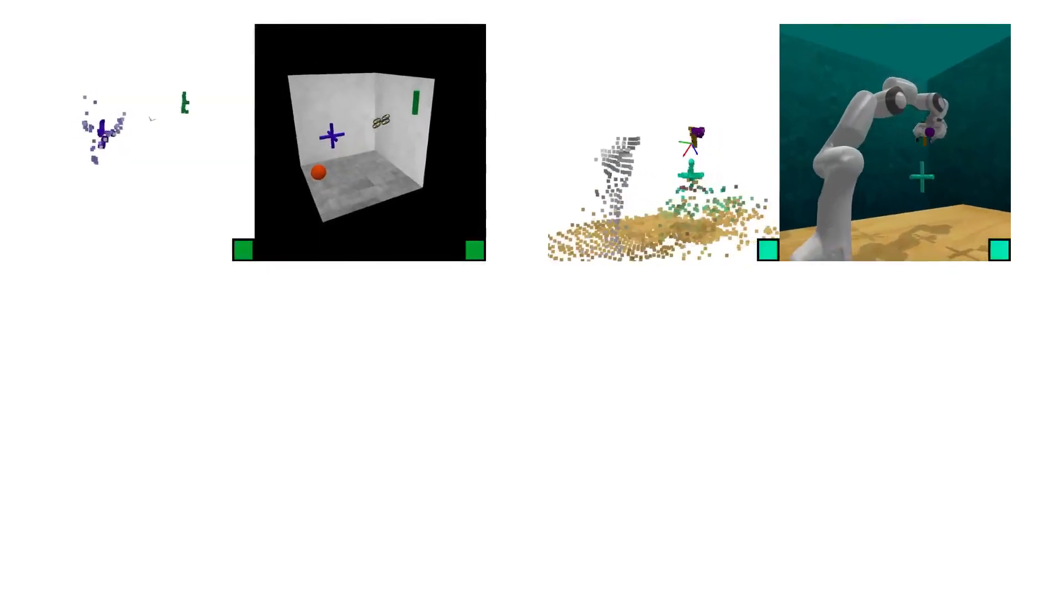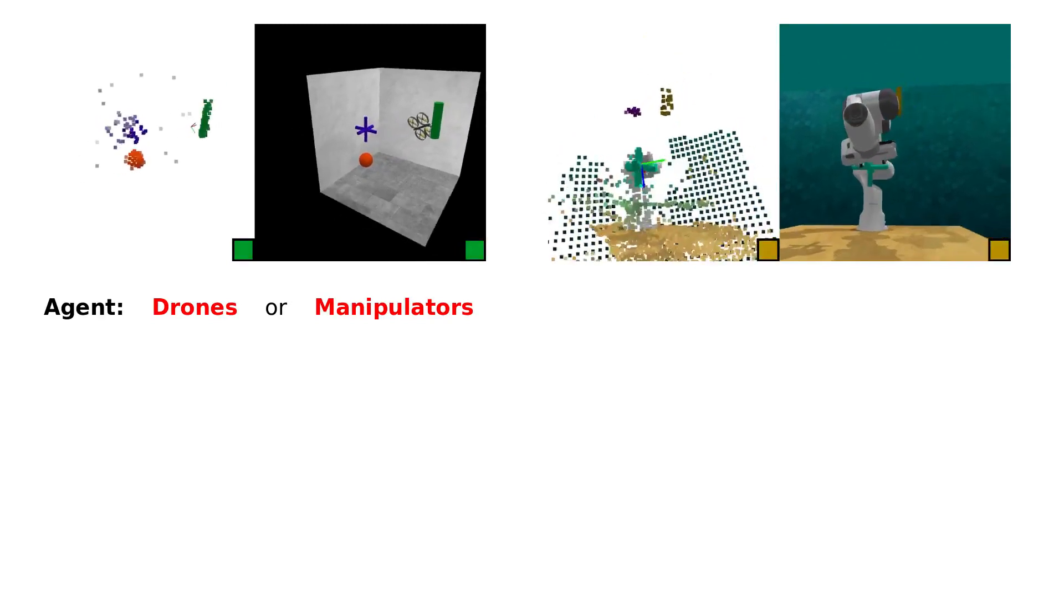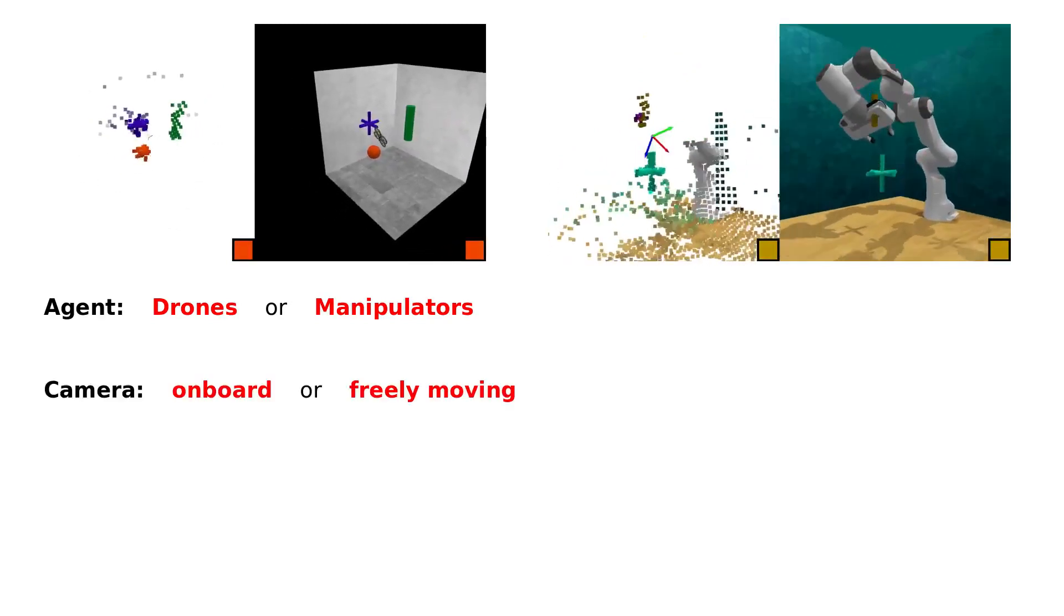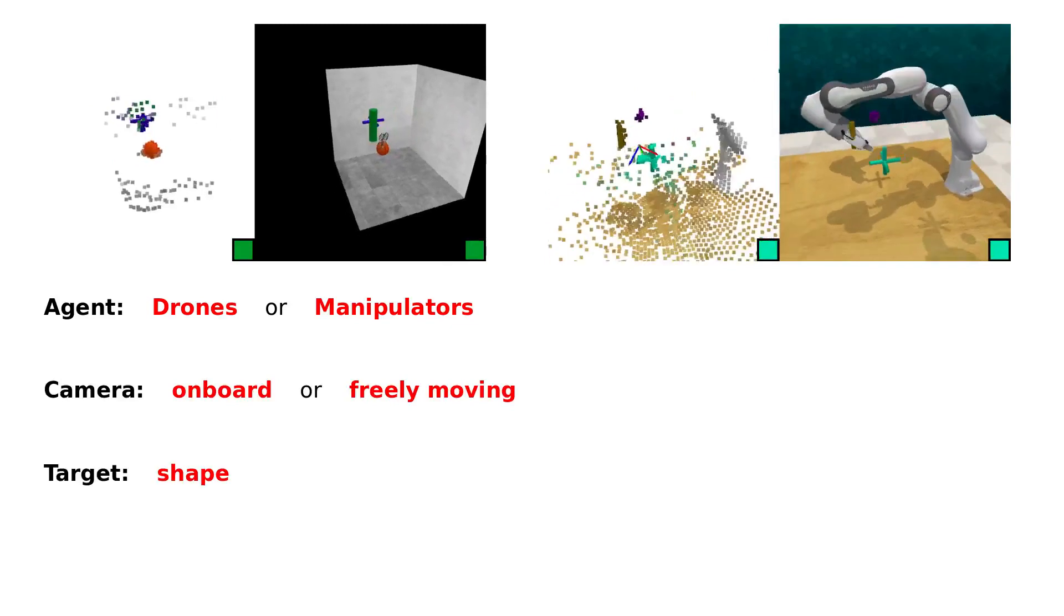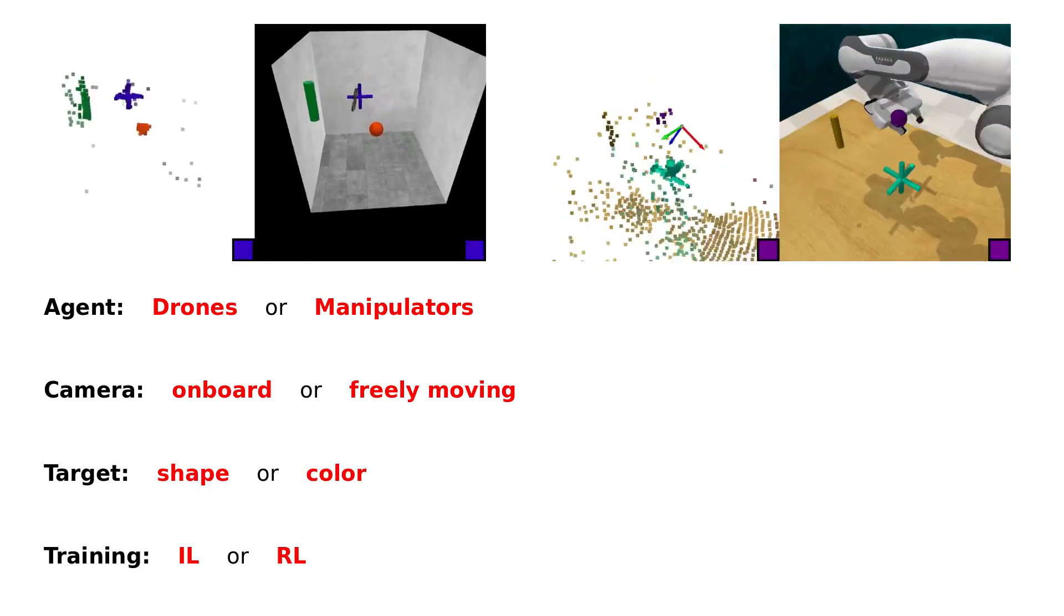We test ESMN in a variety of image-to-action reacher tasks. We test the 6-degree freedom control of both drones and robot manipulators, using either on-board or freely moving cameras, with networks conditioned on target shape or target color, trained using either imitation learning or reinforcement learning.